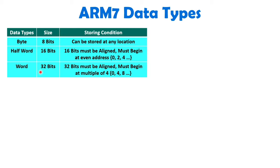When the data is 32 bits in size, then for alignment you will have to store this 4-byte, or 32-bit word data, starting from a memory location which is a multiple of 4. So that address can be 0, 4, 8, or 12. If it is like this, then only ARM7 can read that data with a single machine cycle. These are the essential conditions you must know regarding how we store data.